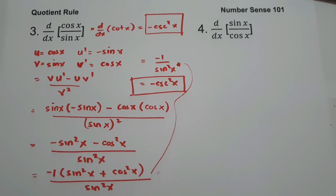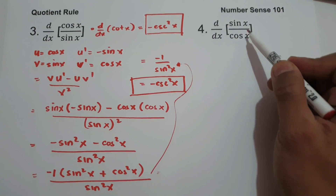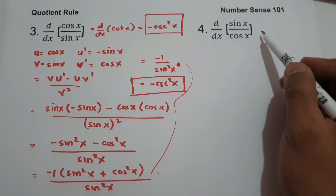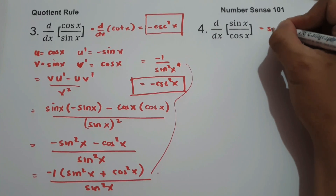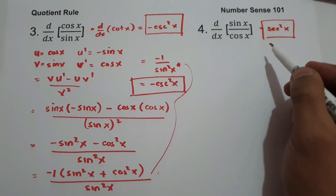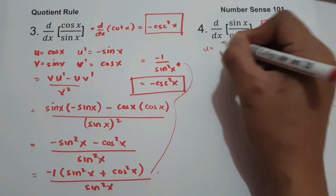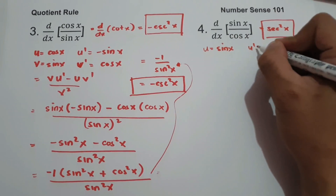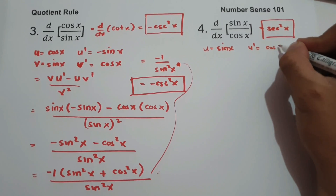On number 4, what is the derivative of sine x over cosine x? Sine x over cosine x equals tangent x, and the derivative of tangent x is secant squared x. That is our answer. But let us also apply the quotient rule formula to verify. Let u equal sine x, and u prime is the derivative of sine x, which is cosine x.